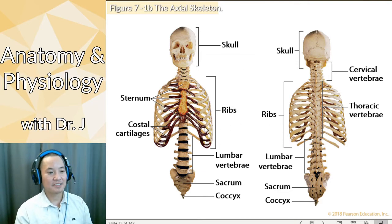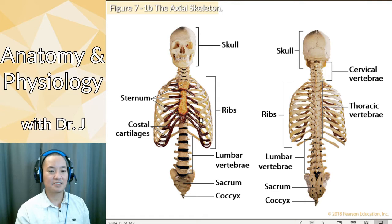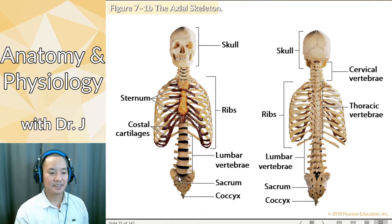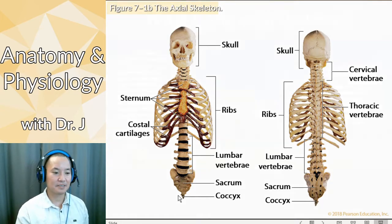These are the parts that make up the axial skeleton. It's not just your skull and spinal column — it also includes your ribs and your sacrum and coccyx as well.